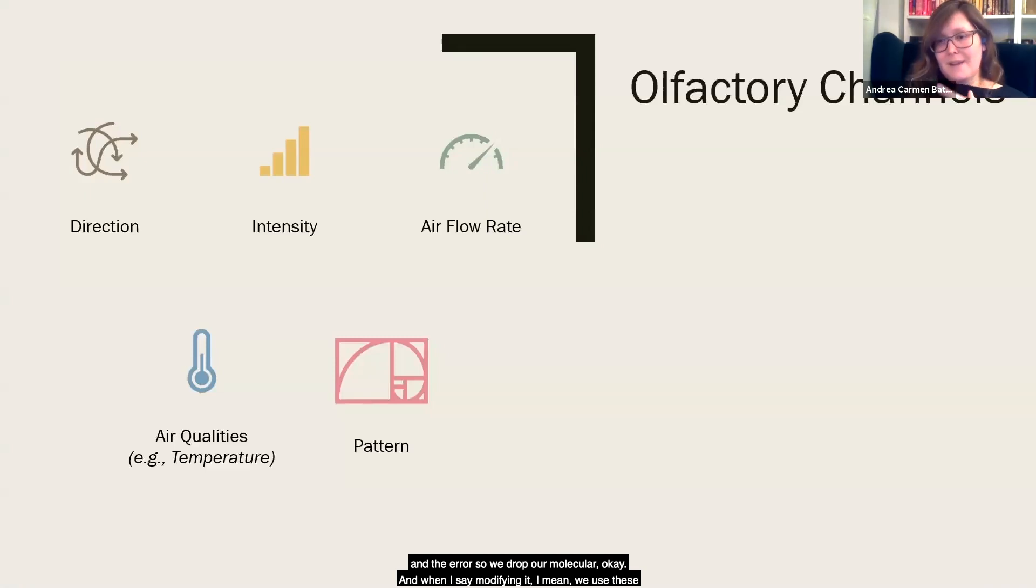And when I say modifying it, I mean we use these different olfactory channels to change the way, change the smells that people are experiencing. So we have these five channels: direction, scent intensity, airflow rate, the qualities of the air like temperature or humidity, and the pattern of the mark or the smell that the user is exposed to, which is sort of like a meta channel. And then it allows us to vary the composition of the smells that the user is experiencing. So evaluating these channels was the primary focus of this study.